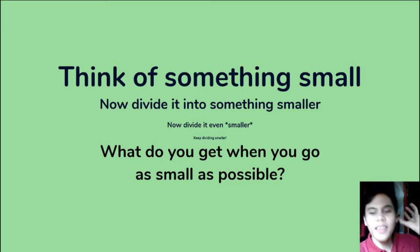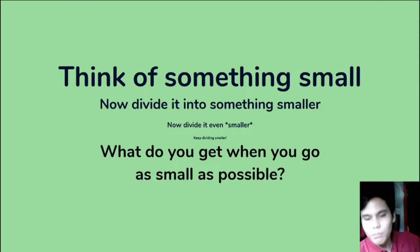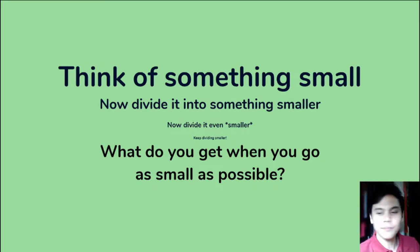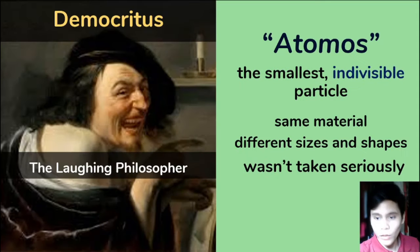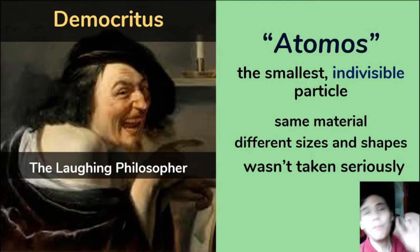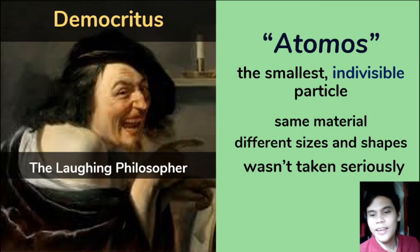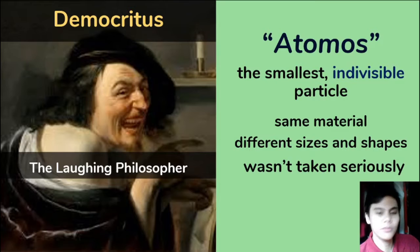So let's do this. If we try to think of something small, then try to divide it into something smaller, and divide it even smaller in your mind and so on — until you get to the smallest possible thing that can no longer be divided. That is the philosophical concept of the atomos. The atomos is the smallest indivisible particle thought up by Democritus, a Greek philosopher, also known as the laughing philosopher. According to him, the atomos is an indivisible particle that has the same material no matter where you find it, and it comes in different sizes and shapes — the indivisible particle that makes up all matter in the universe.